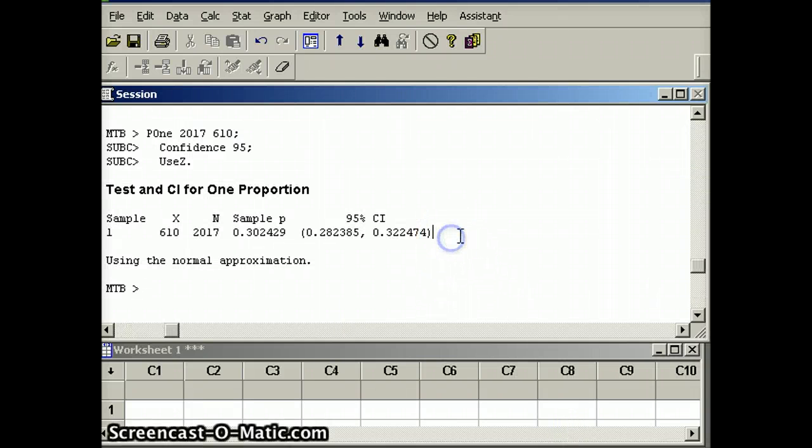So there is my confidence interval. The width of the confidence interval is 0.322 minus 0.282, so the width of the confidence interval is 0.04. The width of the confidence interval is twice the margin of error, so the margin of error is 0.02. And that reinforces what we had done earlier.